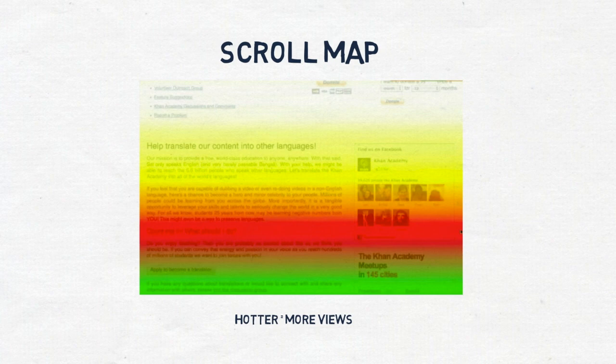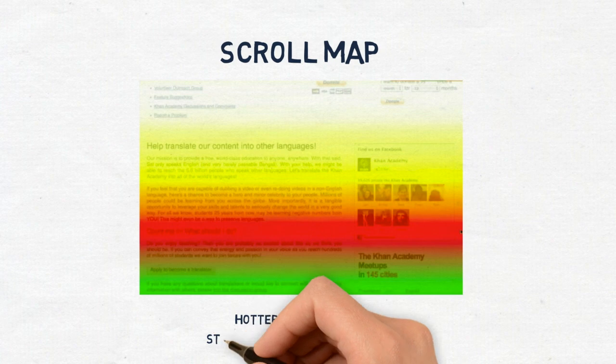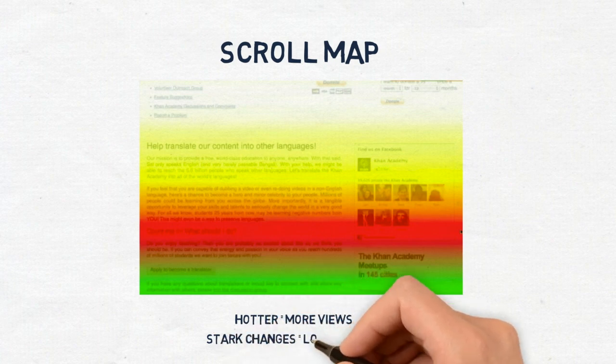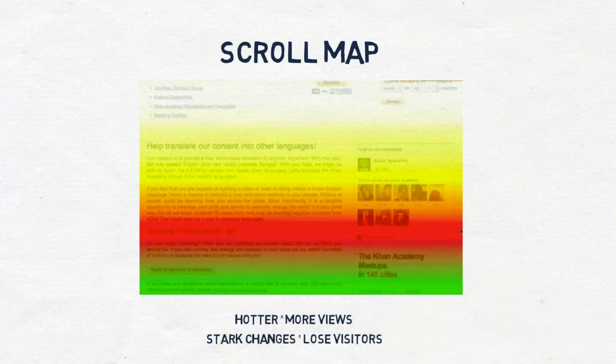Stark changes in color on your scroll map can also help determine which sections of your webpage lose visitors' attention, and whether your users will read long-form or short-form blogs. The founder of ConversionXL put it well: sudden, strong color changes can indicate that visitors think whatever follows is no longer connected to what came before — called logical ends. These are sharp drop-off points that are hard to see with just Google Analytics.